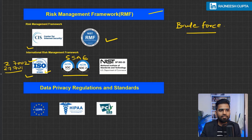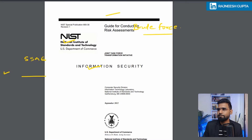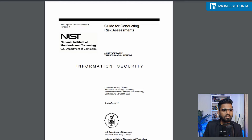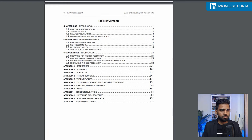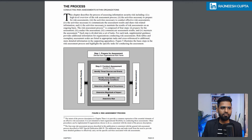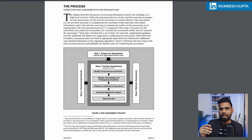Next we have NIST Special Publication 800-30, Revision 1. Looking at the white paper, you get a clear idea of how to assess risk, the different risk management processes, and the stages involved. You prepare the assessment, then conduct the assessment: identify threat sources and events, identify vulnerabilities, determine the likelihood of occurrence, determine the magnitude of impact, and determine the overall risk.